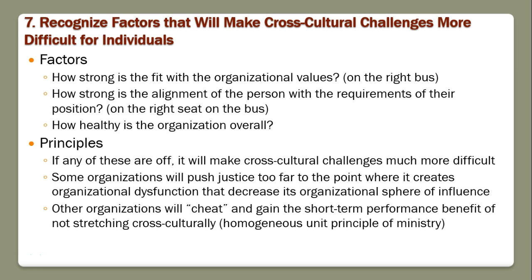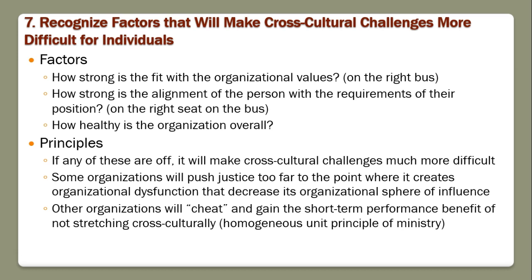Some organizations push justice too far to the point where it creates organizational dysfunction that decreases organizational sphere of influence, and that hurts not just access to resources but also the clients being served. Other organizations cheat and gain the short-term performance benefit of not stretching cross-culturally. In churches, there's the homogeneous unit principle from church growth philosophy — studies have shown that culturally uniform churches grow more quickly, but there are problems with that, as described in the book Divided by Faith. It's like a performance-enhancing drug: it works in the short term, but not necessarily in the long term.